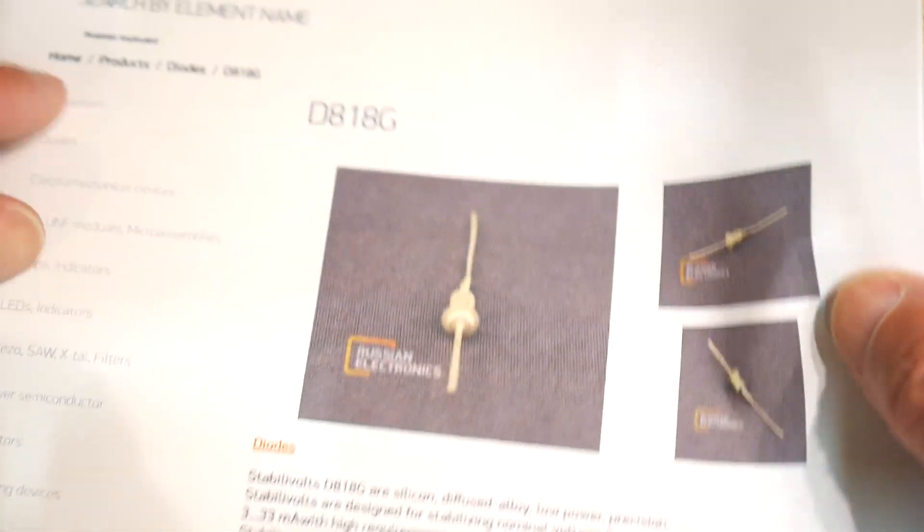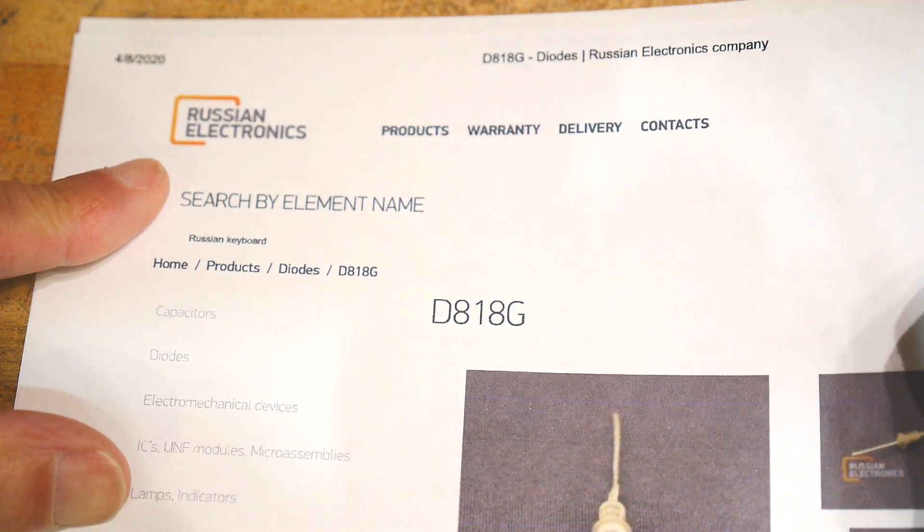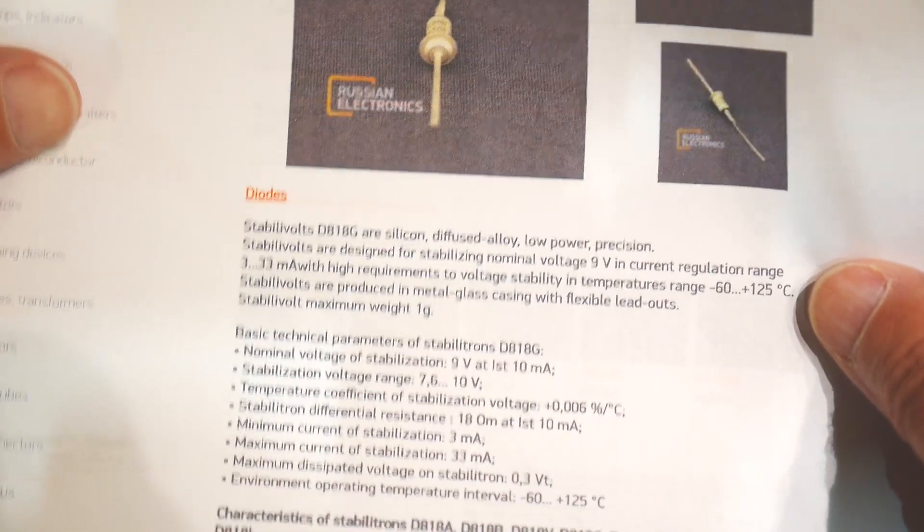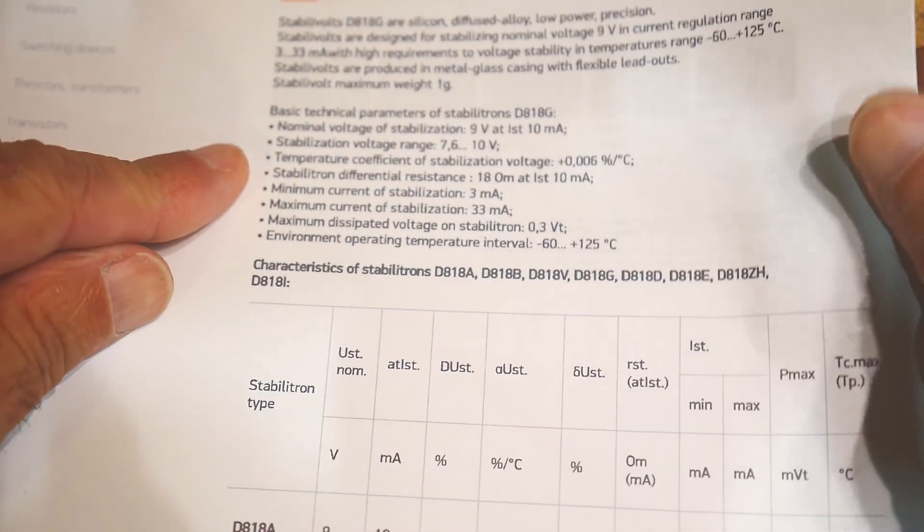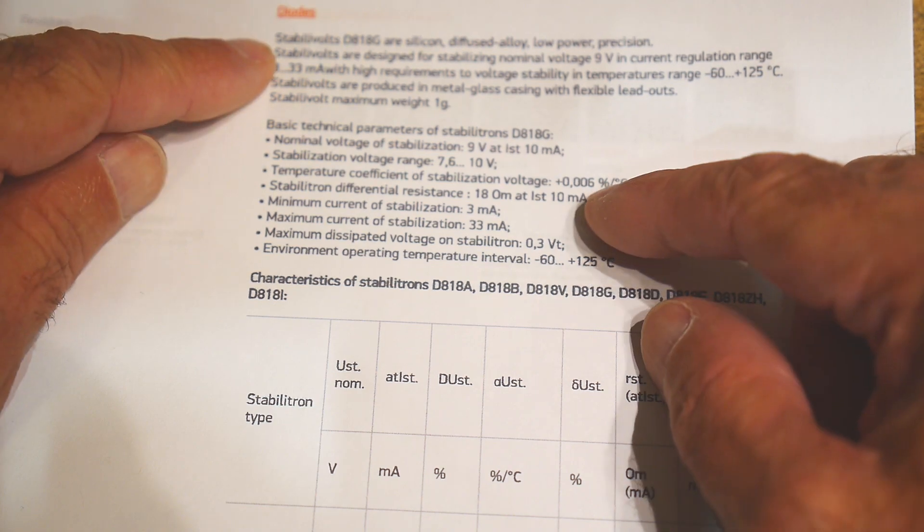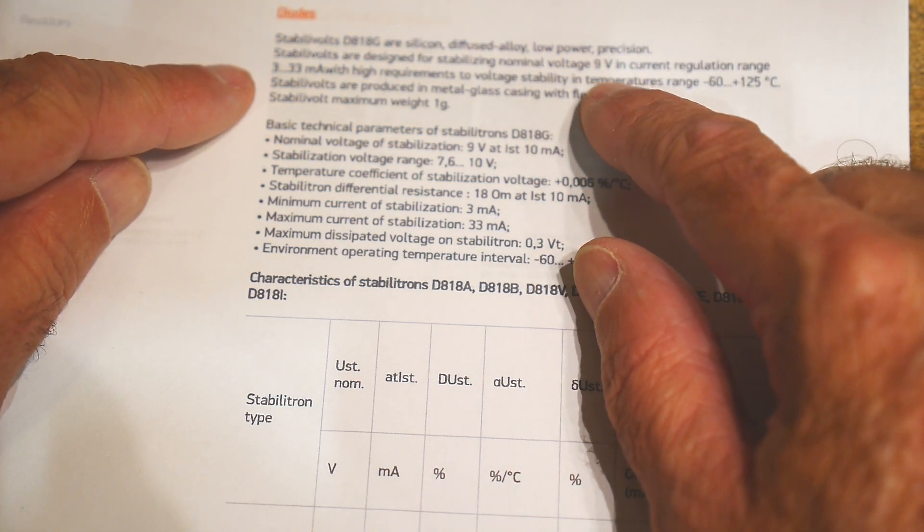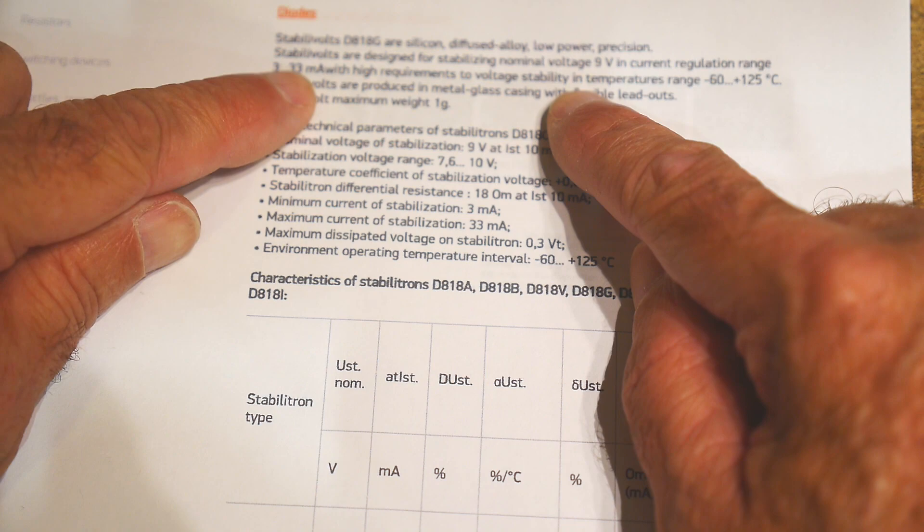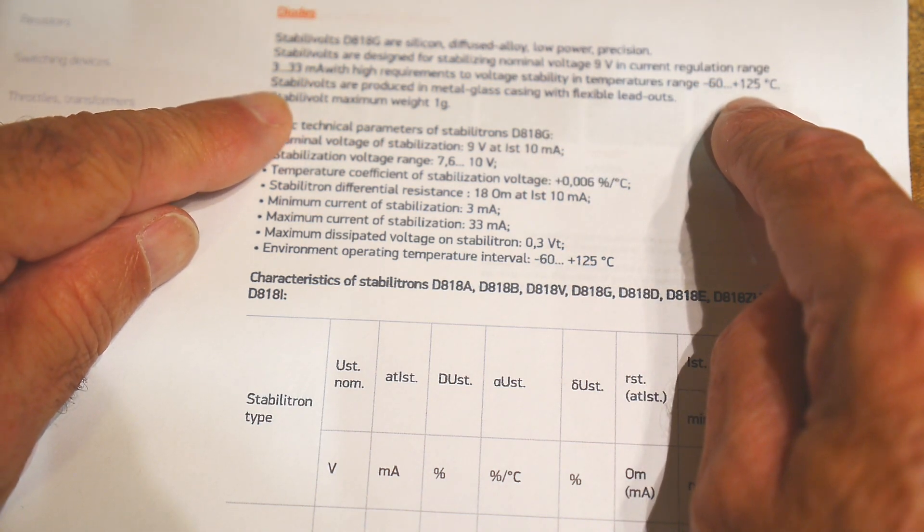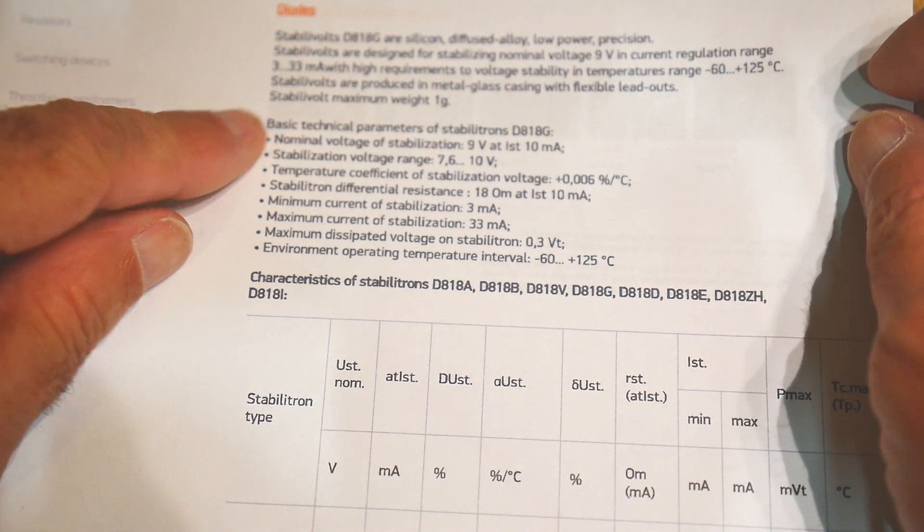Here's a datasheet from Russian Electronics Company. There are a series of these diodes. This is the 9V version, it says the nominal 9V, and it has high stability requirements in the minus 60 to plus 125 centigrade range, so kind of military grade stuff.